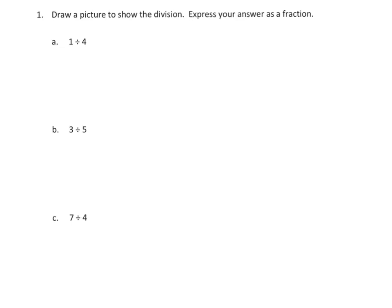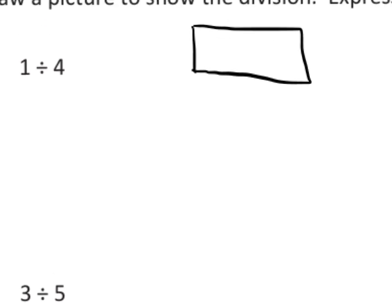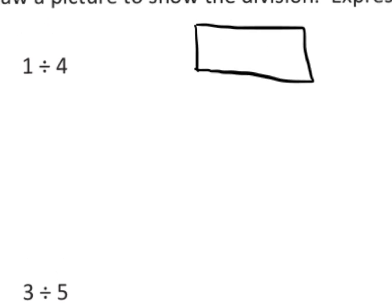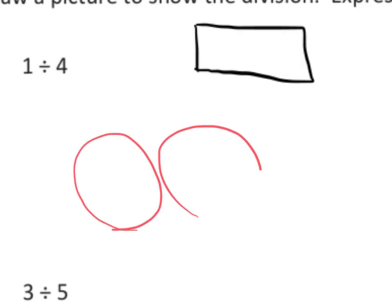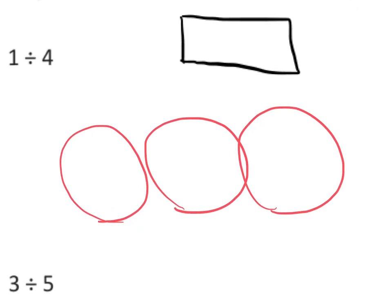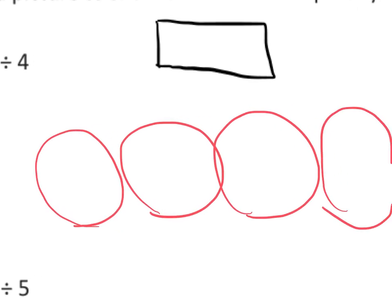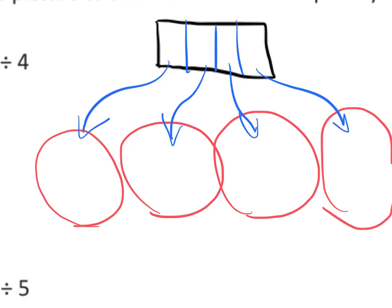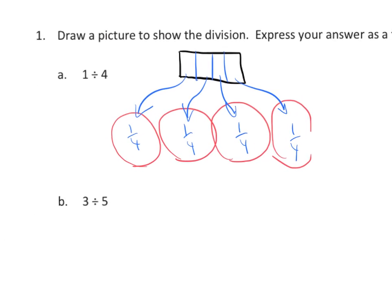Now we've got 1 cookie, and it says we're supposed to divide it up amongst 4 people. Because I only have 1 cookie and need to split it amongst 4 bags, I can't put a whole cookie in any bag. So I take that cookie and cut it up, and each bag ends up with 1 fourth. So 1 divided by 4 equals 1 fourth.